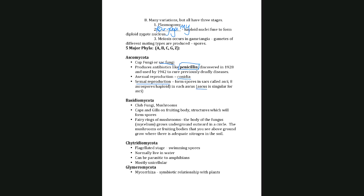One thing I don't want to forget: there is a species of yeast that falls into the Ascomycota group — Saccharomyces cerevisiae. If you bake or brew your own beer, these are the ones used, called brewer's yeast or baker's yeast. This belongs to the Ascomycota group.